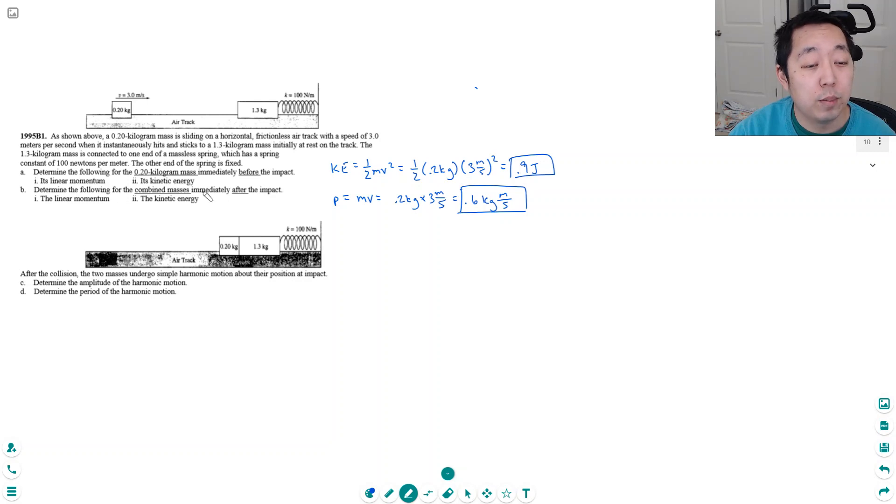Part B: Determine the following for the combined masses immediately after impact. Well what's conserved during the collision is momentum because there's no outside forces. If I consider this whole thing as a system there are no outside forces and this is an inelastic collision because they're stuck together. So all you know is the momentum is conserved. So the momentum is still 0.6 kilograms meters per second.